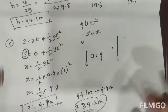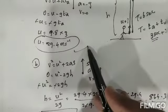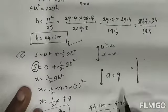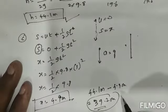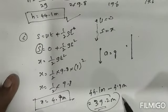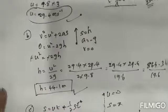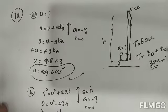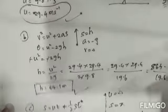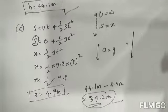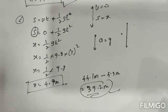I hope you understand how to find the initial velocity, the total height, and the position after 4 seconds. To summarize: Part A answer is 29.4 meters per second; Part B answer is 44.1 meters; and Part C answer is 39.2 meters height from the bottom. Thank you.